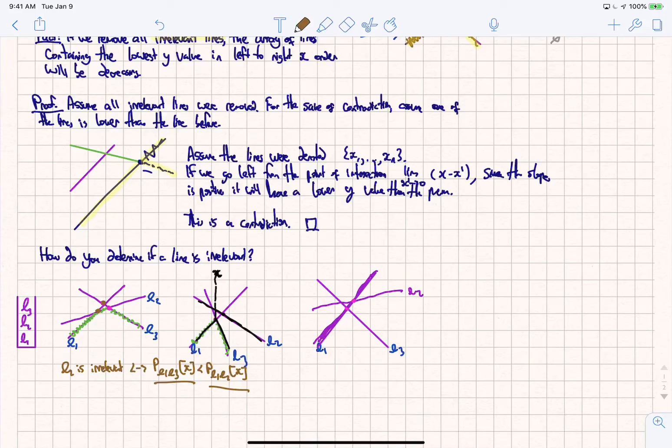So first of all, by definition, L3's slope will be less. So we have the slope of L3 is less than the slope of L2.